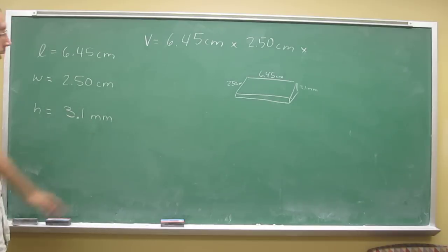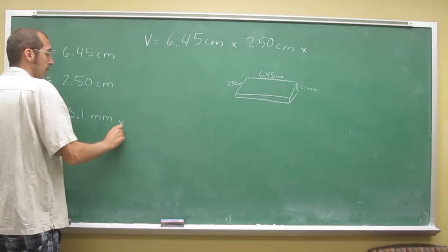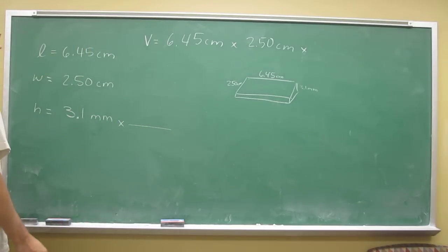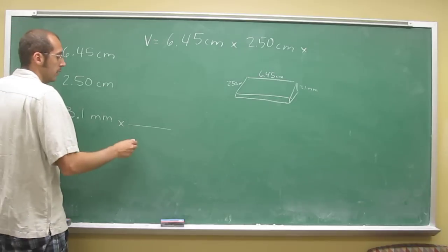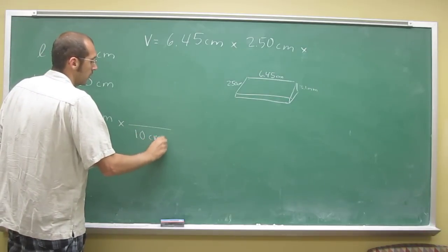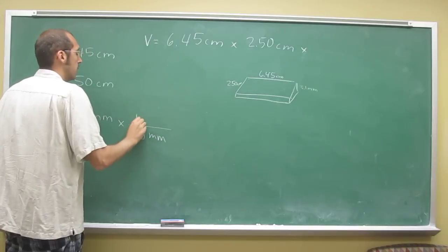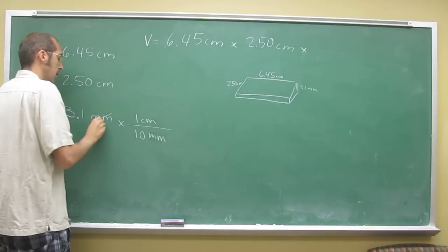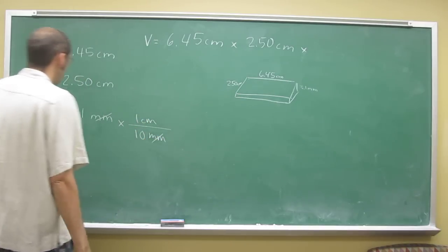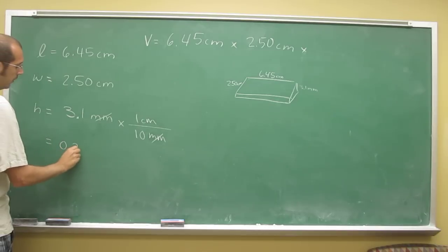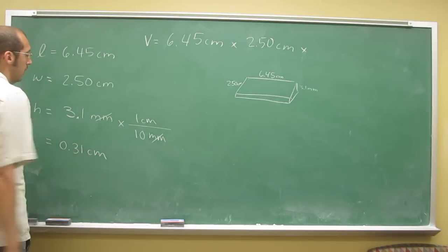I would recommend that you convert this first to centimeters. How many millimeters are there in a centimeter? If you don't know, there's 10 millimeters in 1 centimeter. When you do that, the millimeters cancel, and that's going to make the decimal move over one place: 0.31 centimeters.